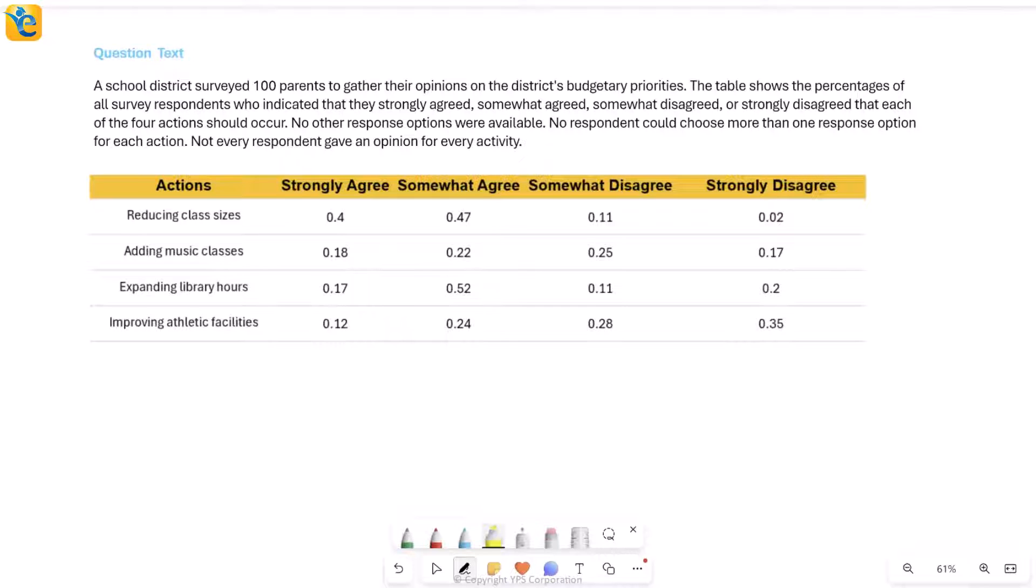Let's solve this question. This is about a certain school district where 100 parents were surveyed. The survey was about the parents' opinions on the district's budgetary priorities. There are some plans about where to spend money and they took opinions from 100 parents about these.